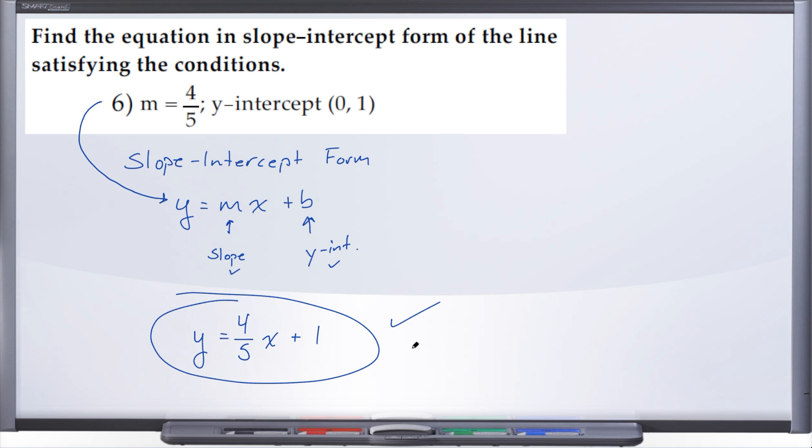And there we have it: y equals 4 over 5 x plus 1. So no real work there, we're just taking information that they've given us, plugging it into the formula, and there we have it.